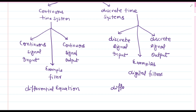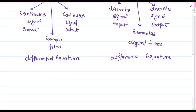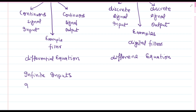It is important to note an important difference between continuous time and discrete time systems. Continuous time systems have an infinite number of possible input values, while discrete time systems have only a finite number of possible input values.